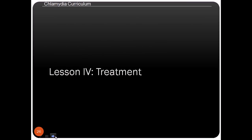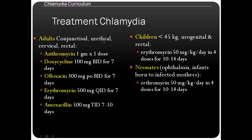Treatment varies between adults and children. For adults with conjunctival, urethral, or cervical infections, azithromycin, doxycycline, and ofloxacin are the primary agents. For children under 45 kg with urogenital infections, similar antibiotics are used with adjusted doses. Good sanitary practices are also essential, as poor hygiene increases susceptibility to infection. Prevention is better than cure.